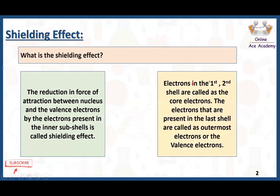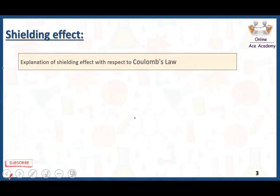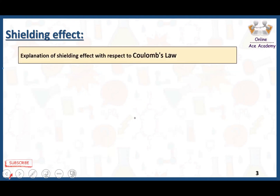Electrons in the first and second shells are called core electrons, and the electrons present in the last shell are called the outermost electrons or valence electrons. Now, the explanation of the shielding effect with respect to Coulomb's law.